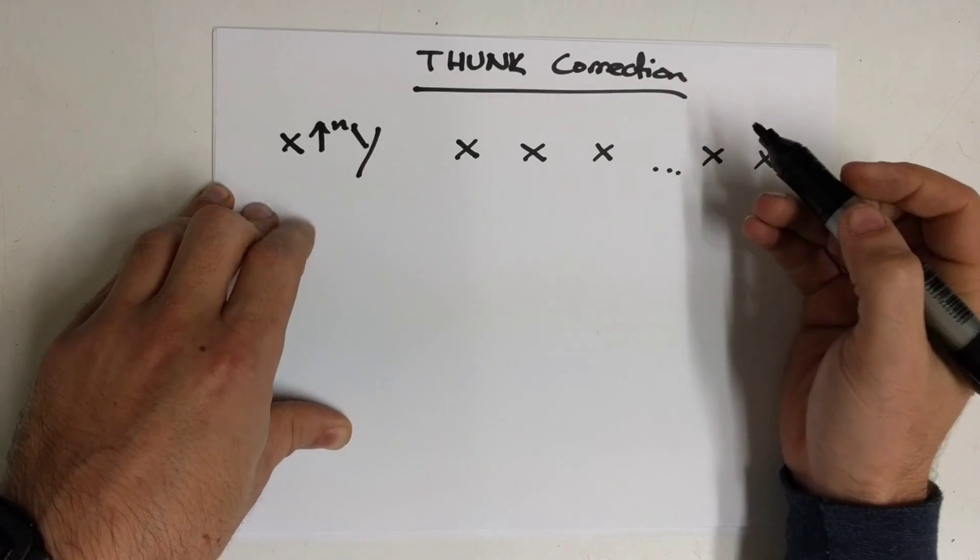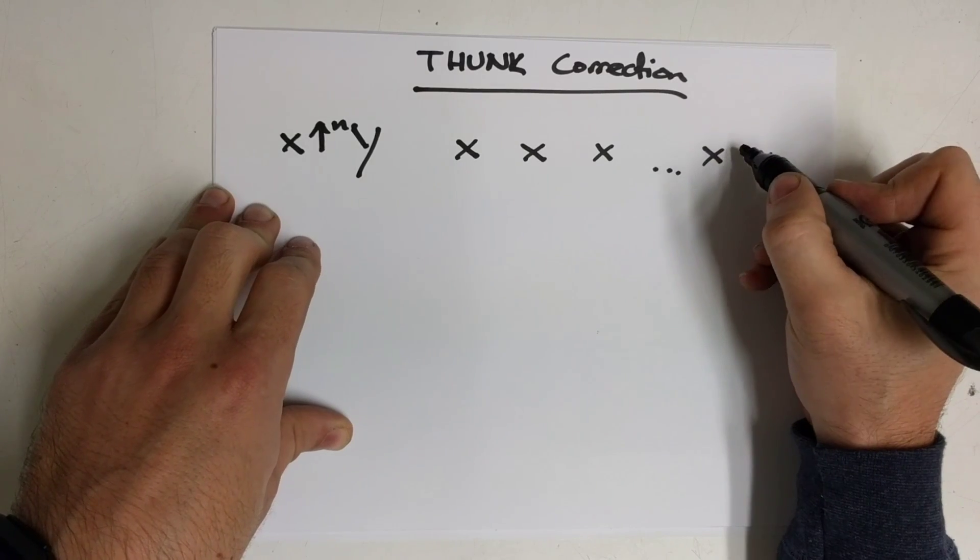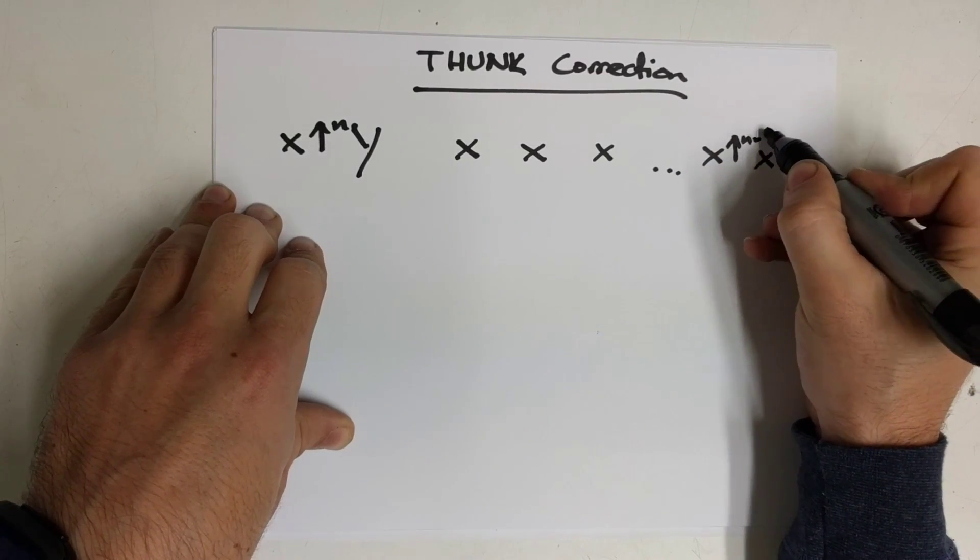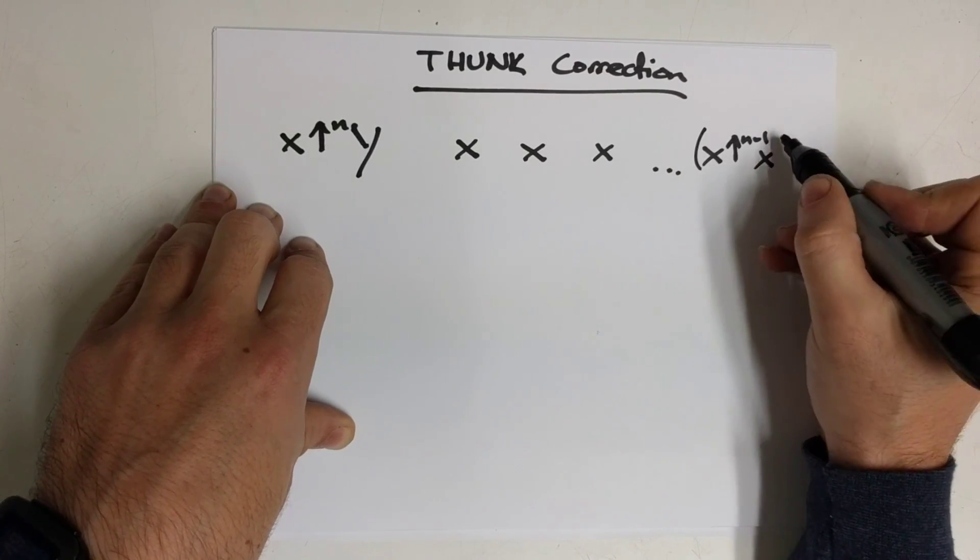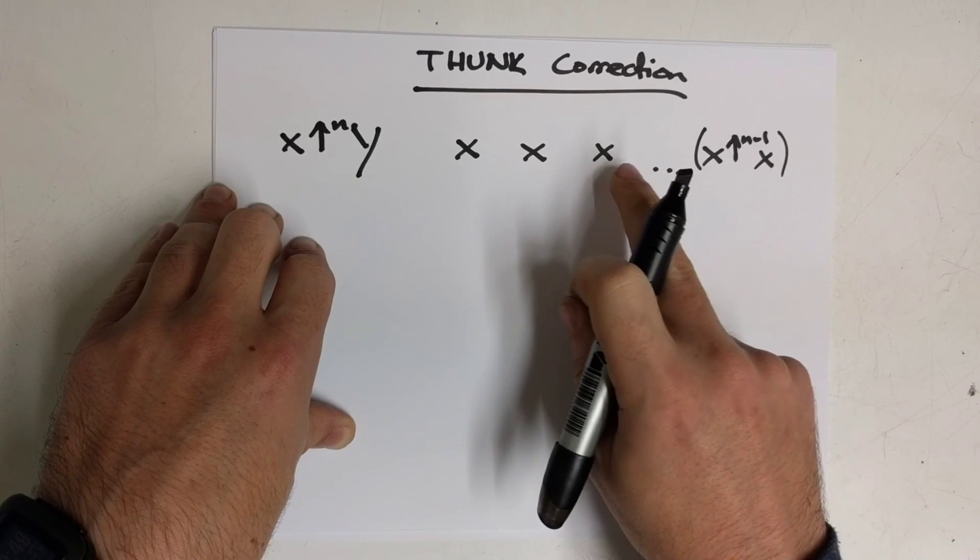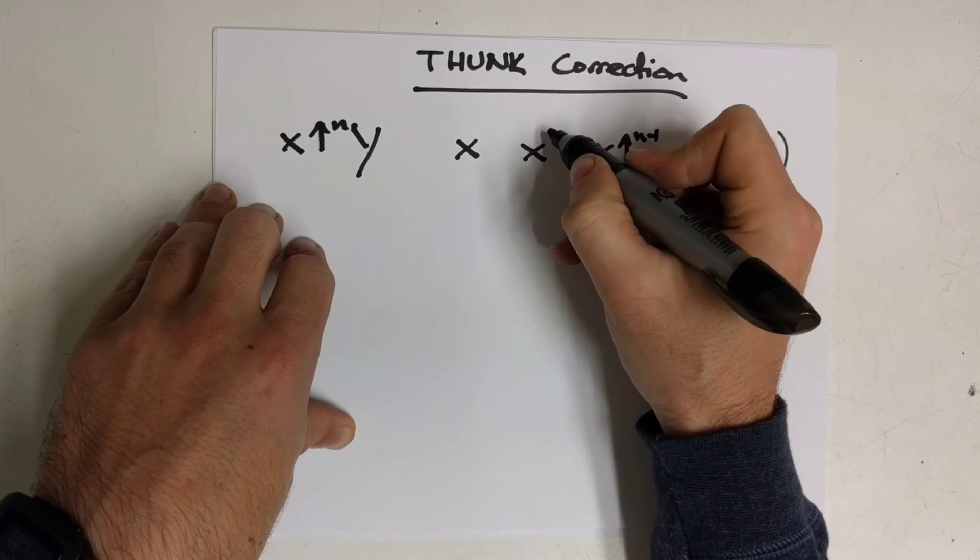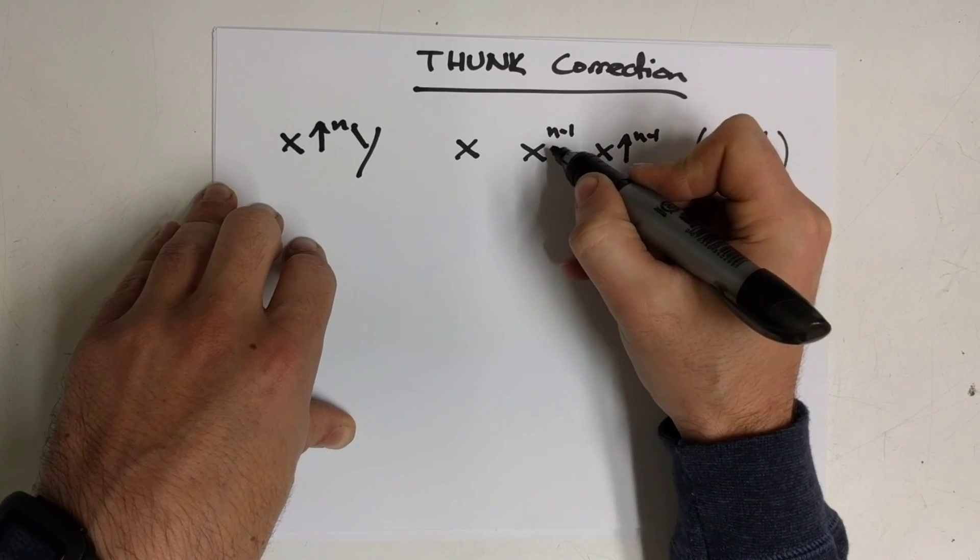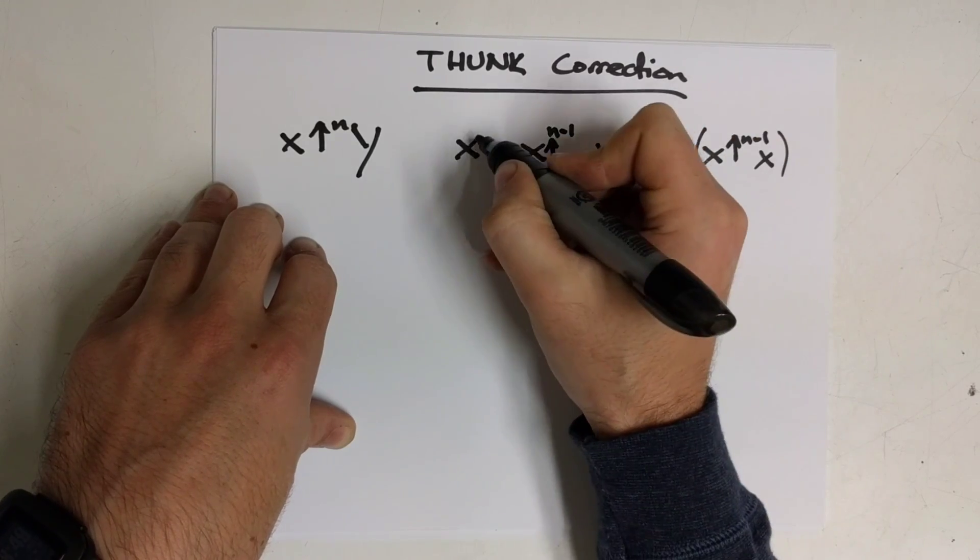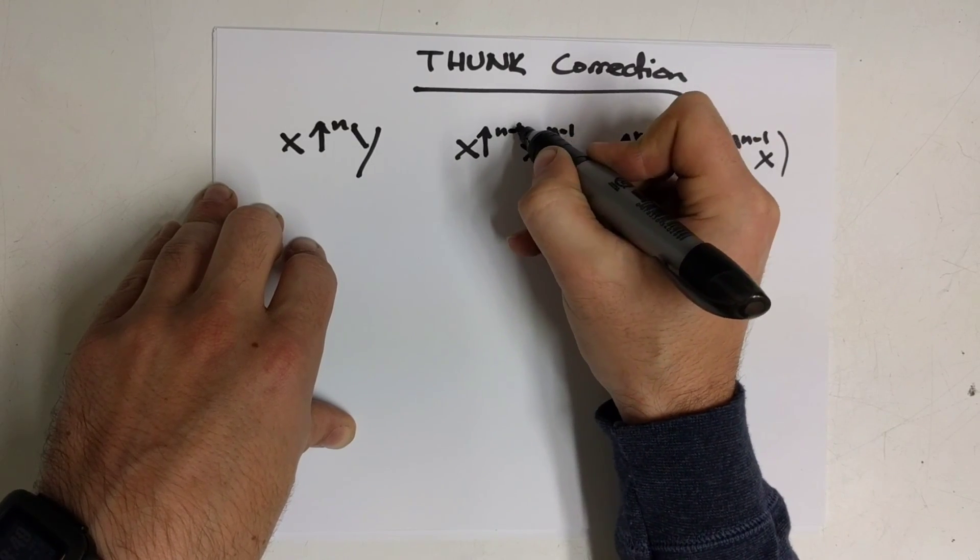So this is n arrows, and this would be n-1 arrows, and then so on and so forth. This would be n-1, this is n-1, this is n-1.